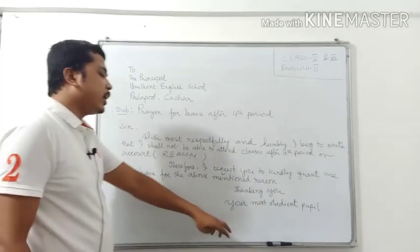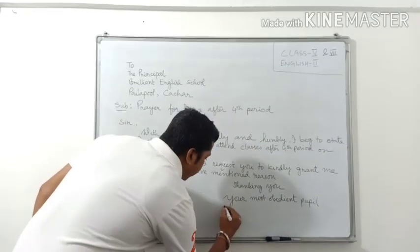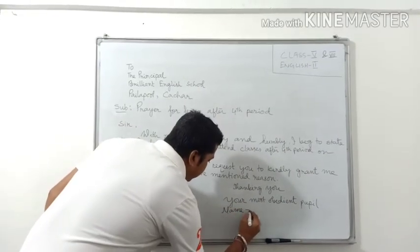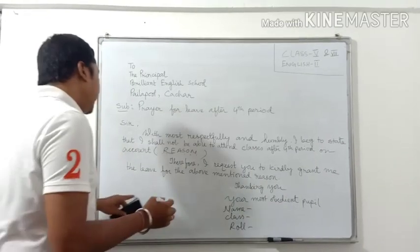P-U-P-I-L. Don't write here P-E-O-P-L-E. Here, pupil means student. Your most obedient pupil, write name, class, then your role.